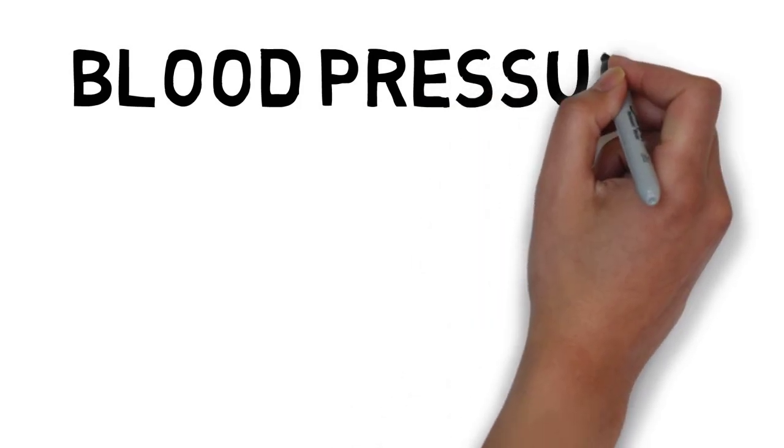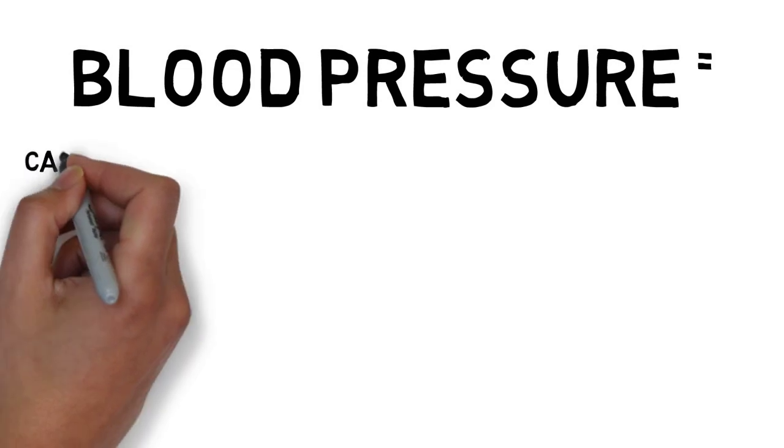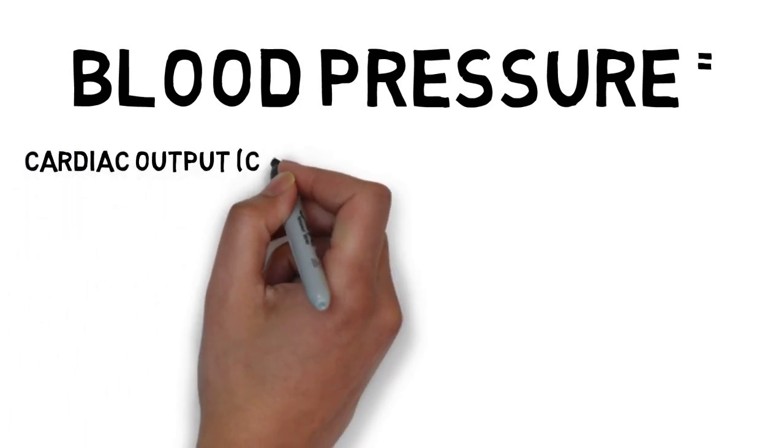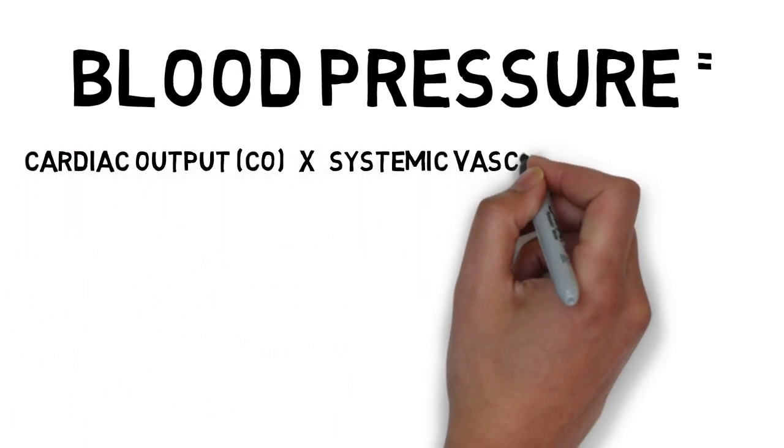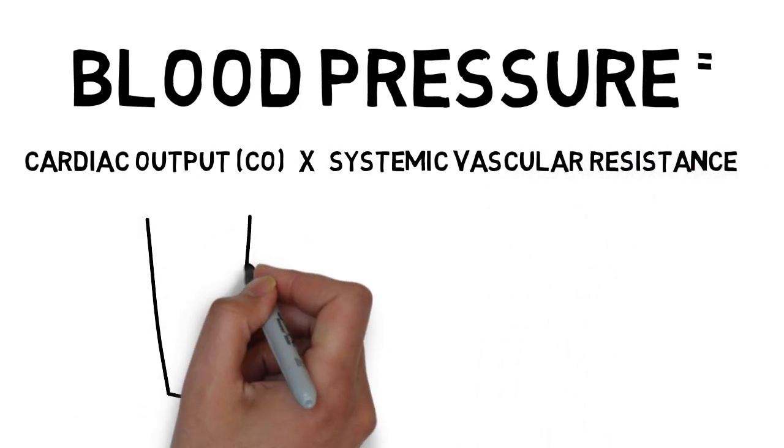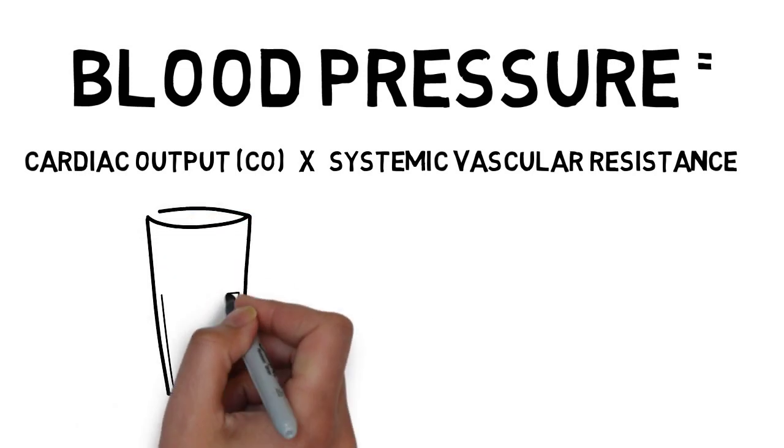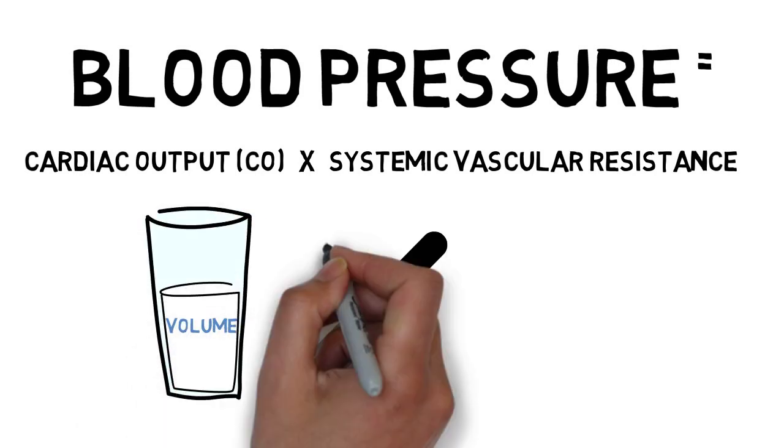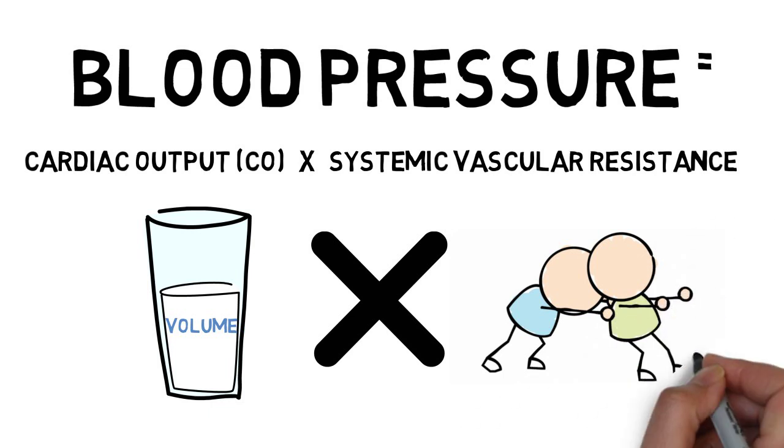So what is blood pressure? Blood pressure is essentially the force or pressure pushing against the artery walls. Blood pressure equals cardiac output times systemic vascular resistance. Now I'm going to explain this simply. This essentially means that your blood pressure is influenced by the volume in circulation and the resistance it needs to push against.